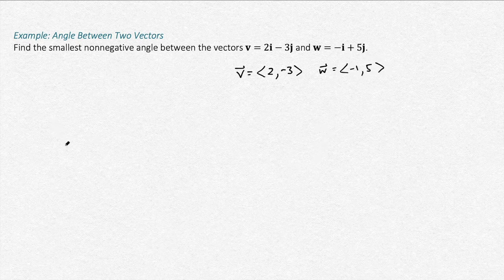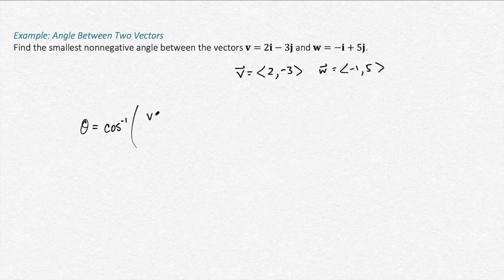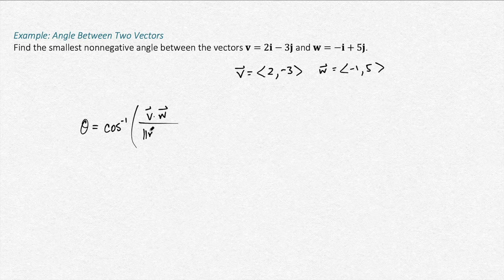And the angle between two vectors, we can use this formula: theta, the angle, is cosine inverse of the dot product divided by, sorry, the product of the magnitudes of those vectors.